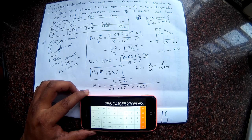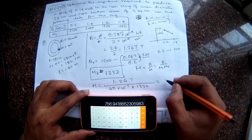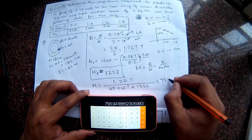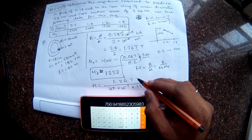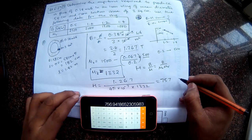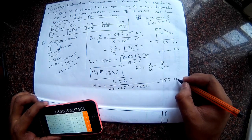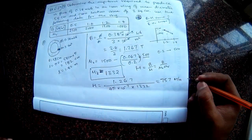1.267 divided by 4 into pi into 7 with a minus sign, 10 power 7 into 1332. So I am getting 757. So what is the unit? So if you look at this, I think this is ampere turns per meter. This is the unit of the H.